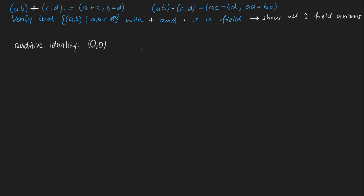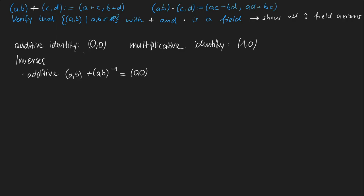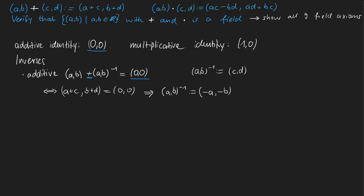For the additive inverse we need an element that when added to (A,B) gives the additive identity (0,0). So (A,B) plus (A,B)⁻¹ equals (0,0). Calling (A,B)⁻¹ as (C,D) and applying the addition, we get (A+C, B+D) should equal (0,0). Thus C must be −A and D must be −B, so the additive inverse is (−A, −B).